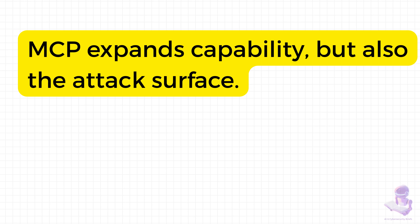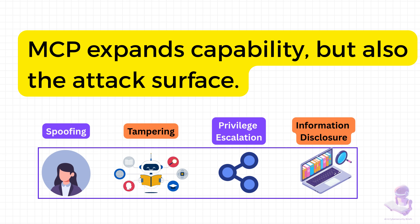We've seen how MCP connects language models to the real world, unlocking incredible new capabilities. But with every new connection comes new risk. Each bridge between the user, the agent, the connector, and the data expands the attack surface. That's why threat modeling matters. STRIDE gives us a way to see those risks before attackers do — to secure the path instead of patching it later. Whether you're building or deploying MCP, remember this: security isn't a feature to add later, it's the foundation that makes the whole system trustworthy. Secure the bridge before you cross it. Till the next session. Take care.